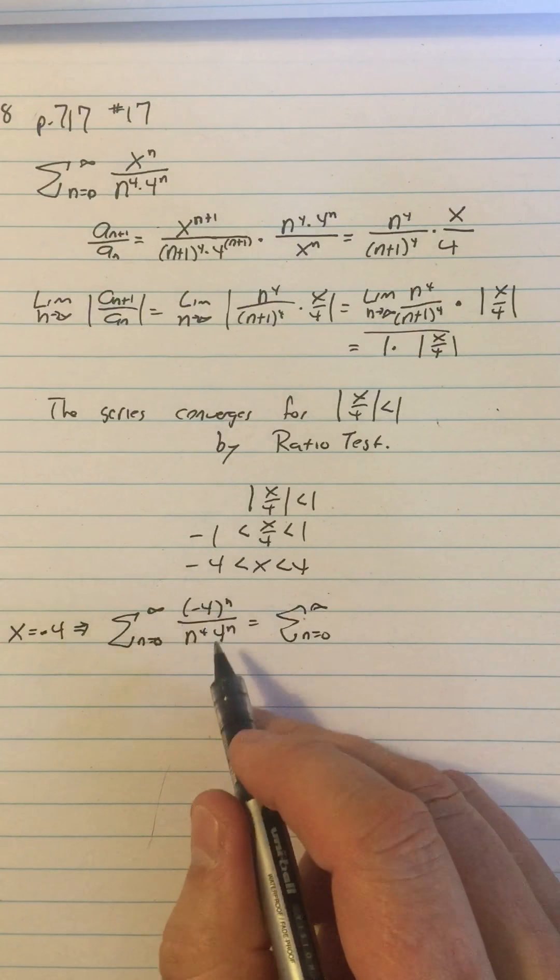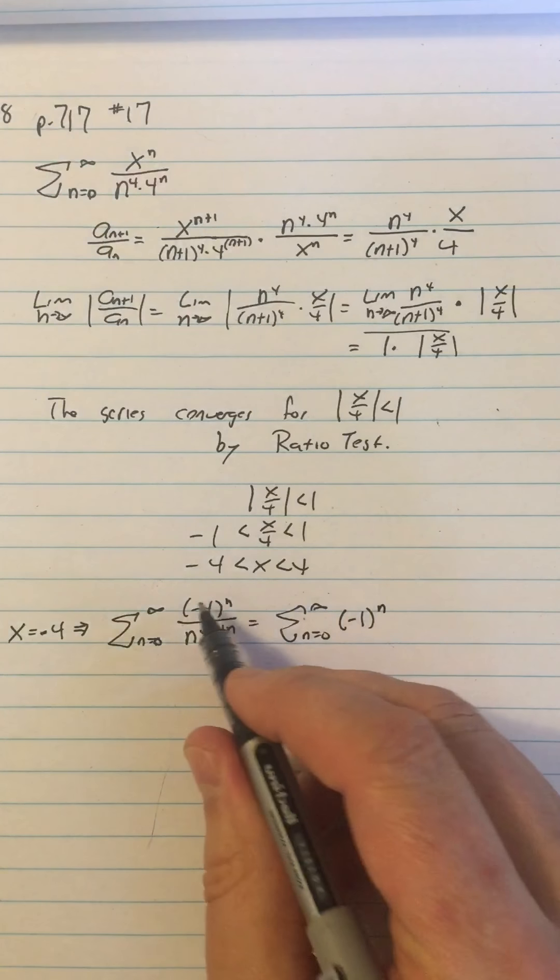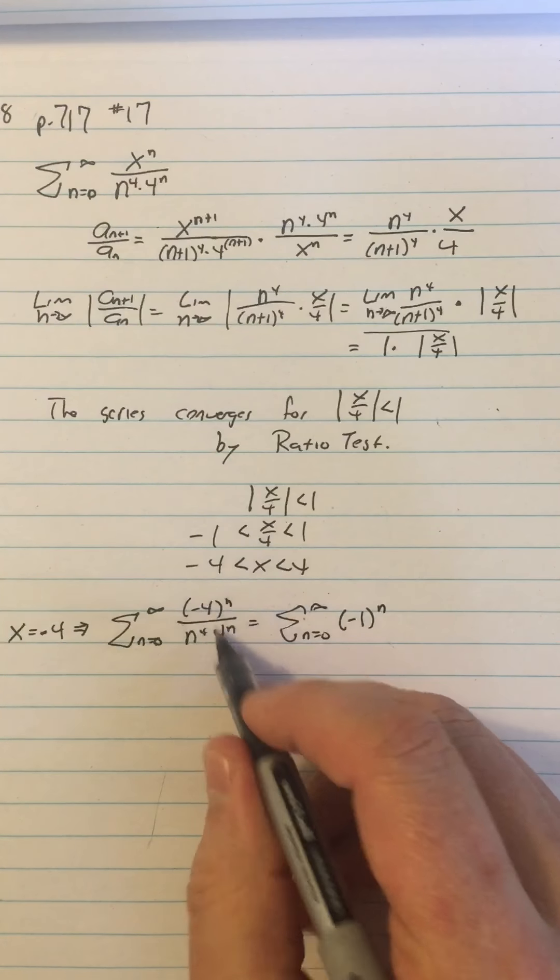So I could bring the exponent out and call it negative 4 over 4 to the n, which I could then reduce and call it negative 1 to the n. So these two are just reduced to be negative 1 to the n, and then I have times 1 over n to the fourth.